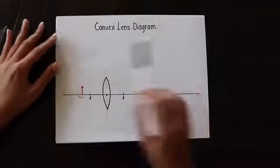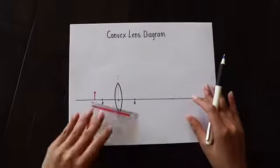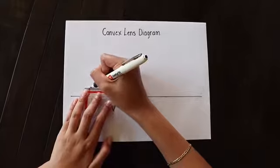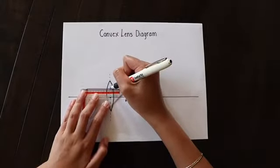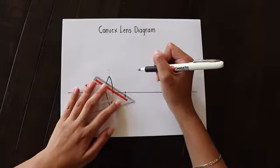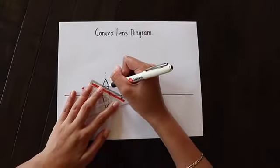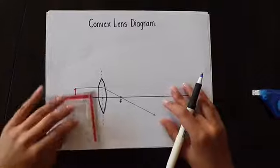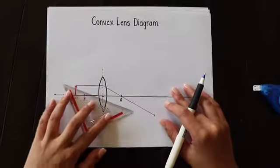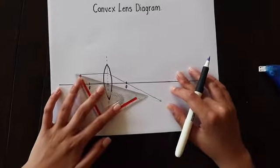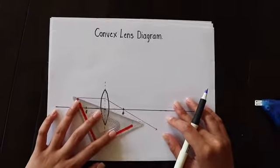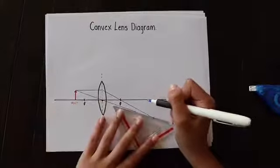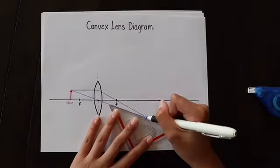Finally, we're going to be doing the convex lens diagram. This one's the easiest in my opinion. Beginning with the first ray going parallel to the x-axis, when it hits the center of the lens, it's going to refract through the focal point on the other side. The second ray is going to go straight through the vertex of the lens. We're going to make the ruler long enough and continue the ray until it intersects with the first one.